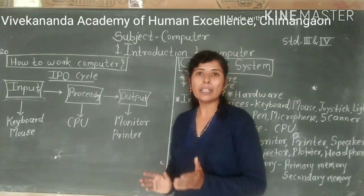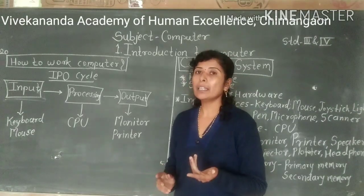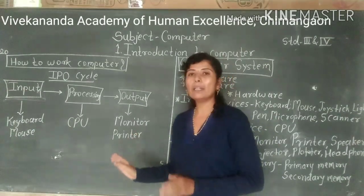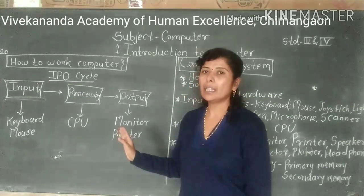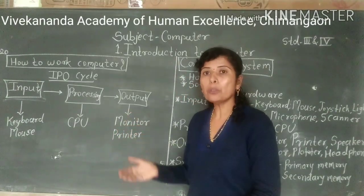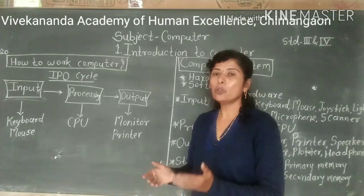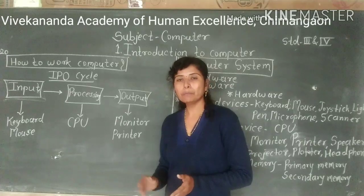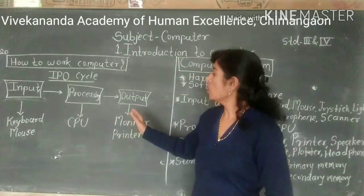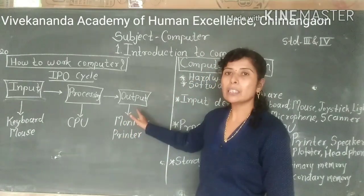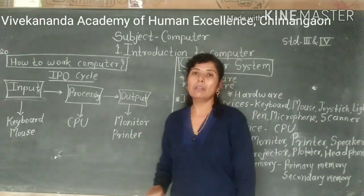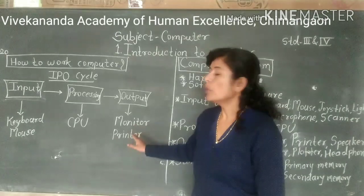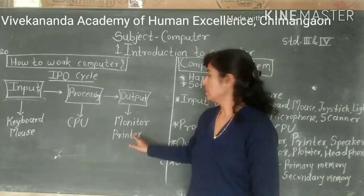So what does the result mean? First of all, it is displayed on the monitor. What does output mean? The result is shown on the monitor. Output means you get and obtain results — the result is displayed on the monitor, and monitor is an output device.